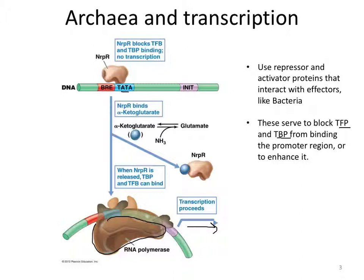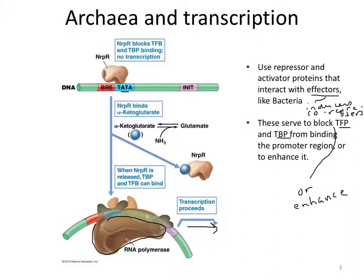Instead they use transcription factors, particularly TFB and TBP, in order to help tether RNA polymerase to the promoter region, thereby facilitating transcription. Without going into the details of this particular figure, it's important to know that archaea do use repressor and activator proteins, and that those proteins interact with molecules known as effectors — inducers and co-repressors, just like in bacteria. These primarily serve to block or enhance the binding of transcription factors TFB and TBP to the promoter region, thereby blocking or enhancing transcription.